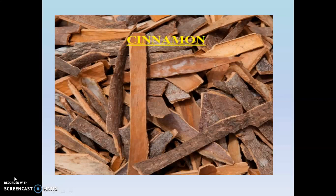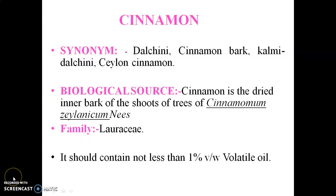In this video we are going to study regarding the synonym, biological source, macroscopy, microscopy, chemical constituents, as well as the uses of cinnamon bark. As per our tradition we are using many spices, and one important spice is cinnamon, which contains volatile oil responsible for its specific aroma. In Marathi it is known as dal chini, while in Hindi it is known as kalmi dal chini. It is also synonymous as cinnamon bark or Ceylon cinnamon.